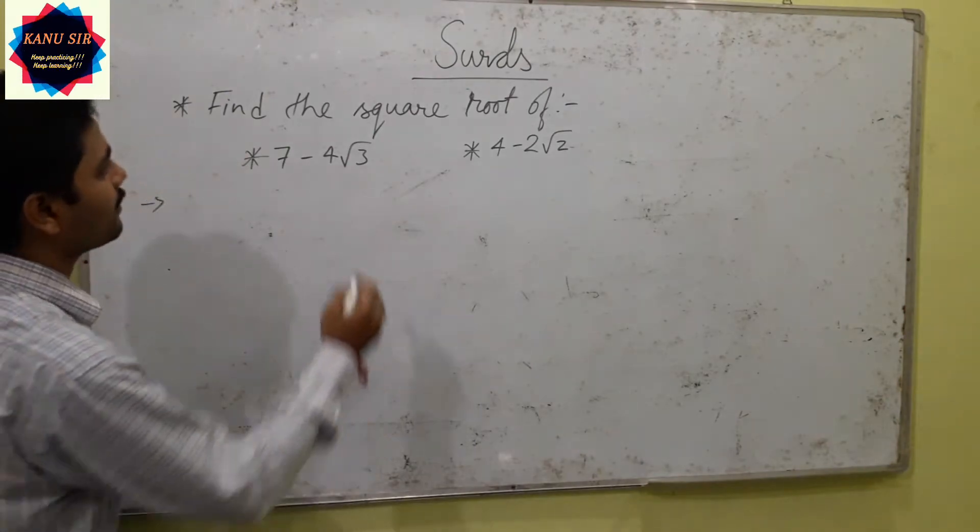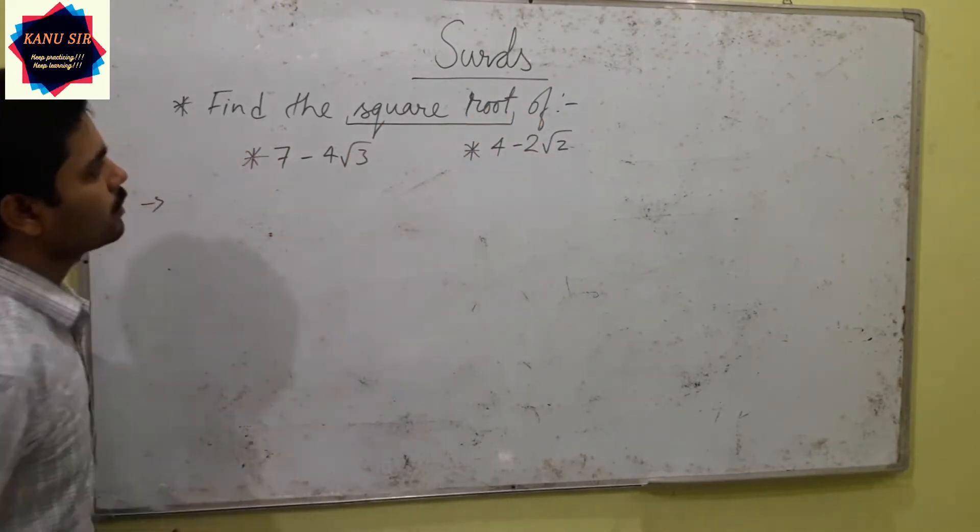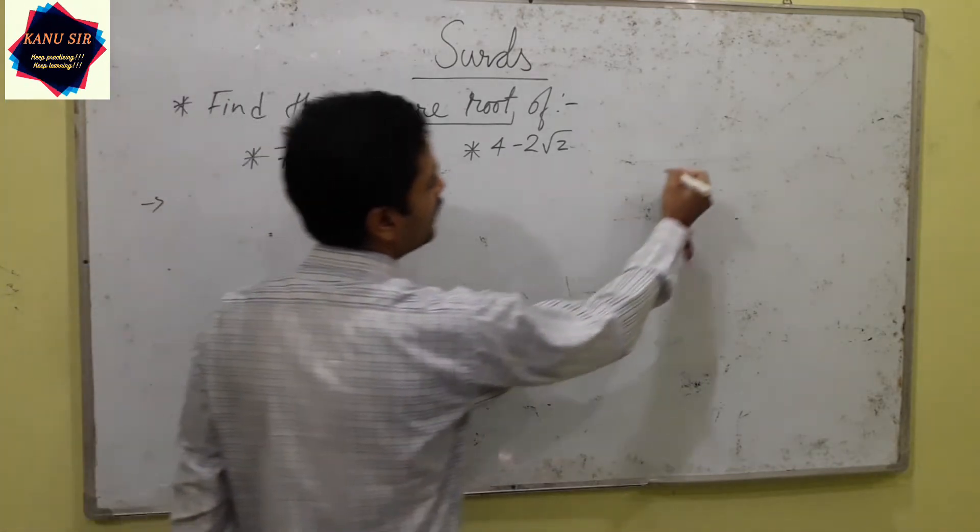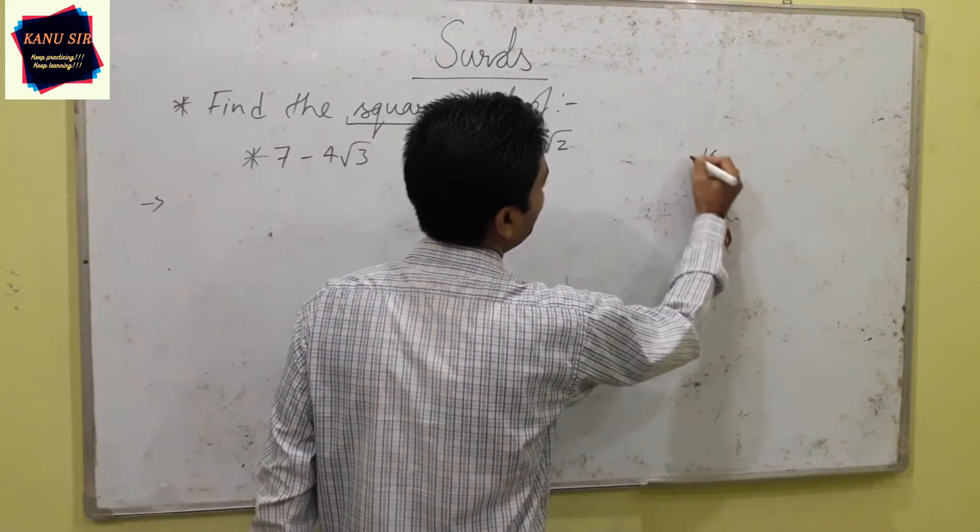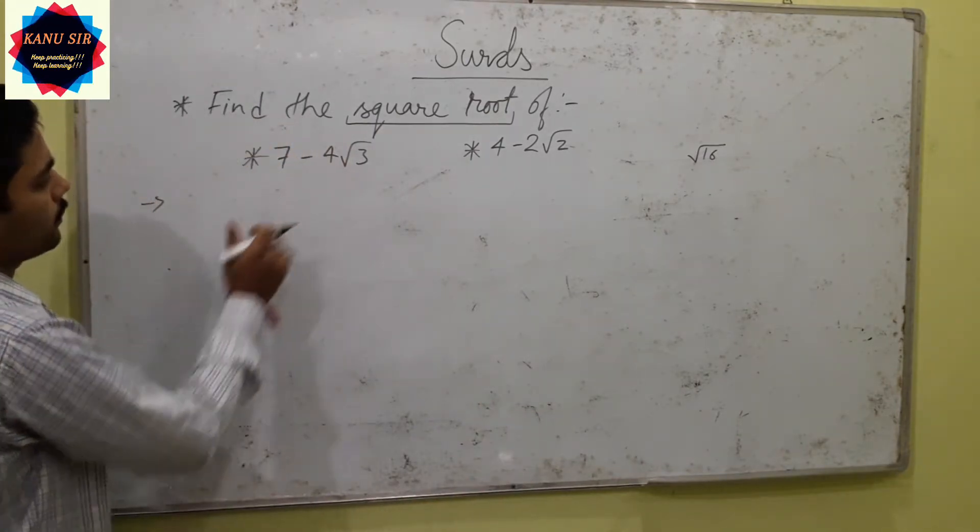Here is the question that asks about the square root of given terms. Simply, if we were given any number like 16, we could get the square root very easily. Here we are asked to find the square root of a whole term.